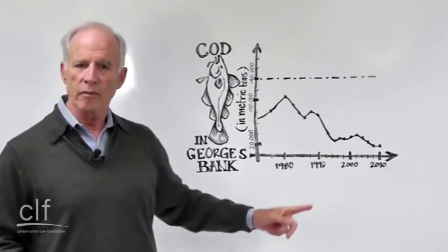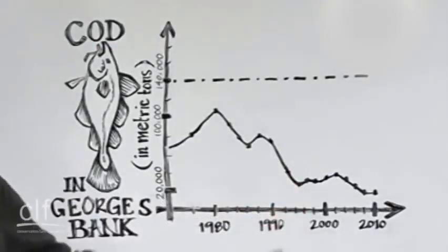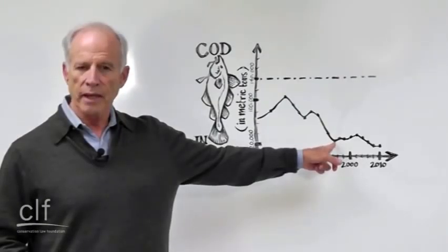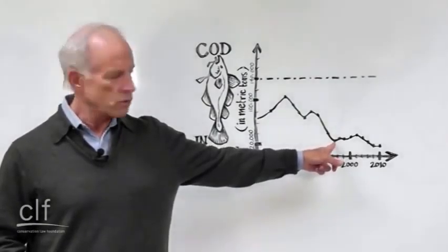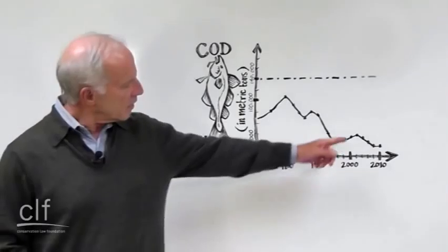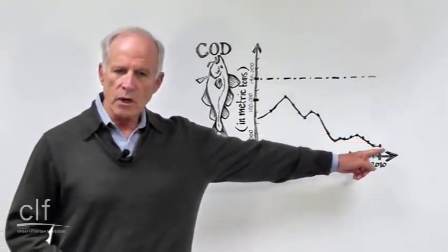In fact it got so bad we sued the government and 1994 is when the first management plan after our lawsuit took effect. It had some impact, you can see a slight growth in the population, but then recently it has started to plummet again.